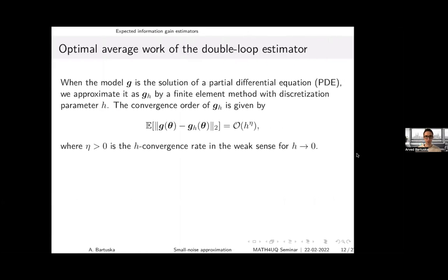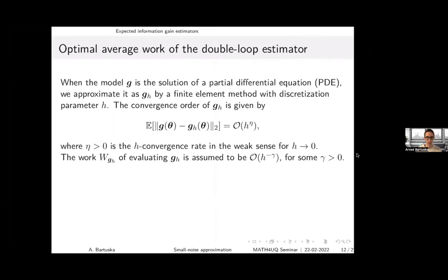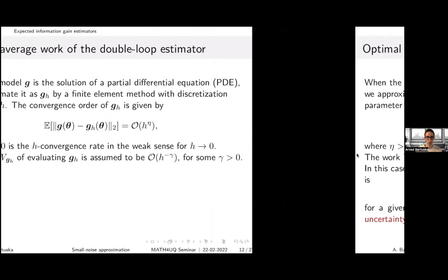For most interesting problems, the model depends on a partial differential equation. We approximate using finite elements with discretization parameter h, and assume the weak convergence rate as h goes to zero is of order h^eta. The work associated with evaluating this discretized function is h to the minus gamma for constants c and gamma.